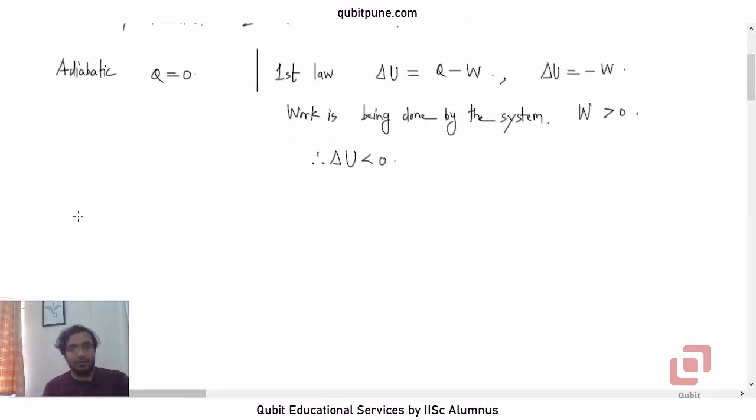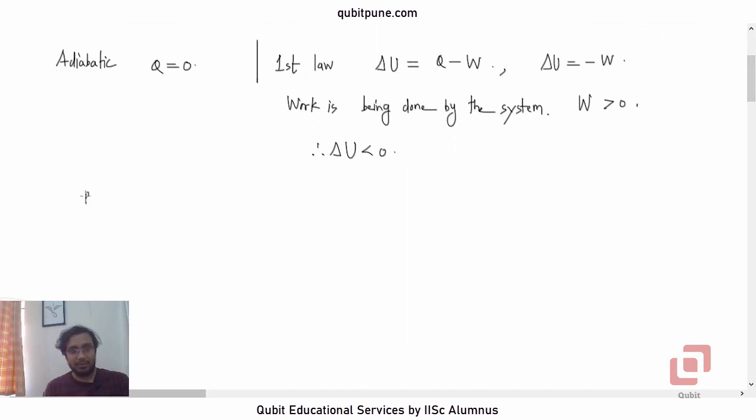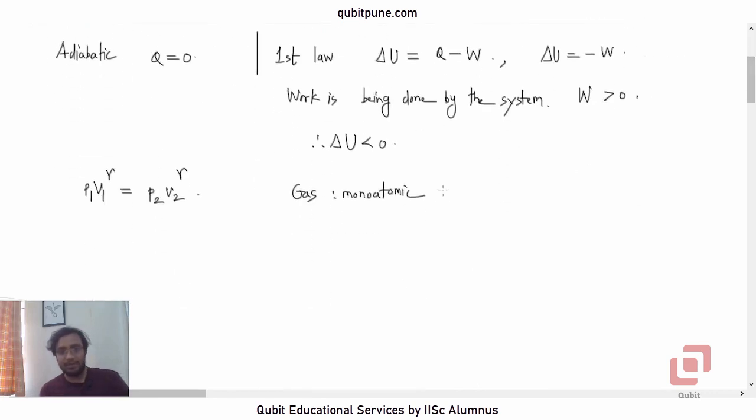We have two equations. The first one is the adiabatic process equation: P1V1^gamma = P2V2^gamma. The gas is monoatomic, it is given in the problem, so gamma will be 5/3.